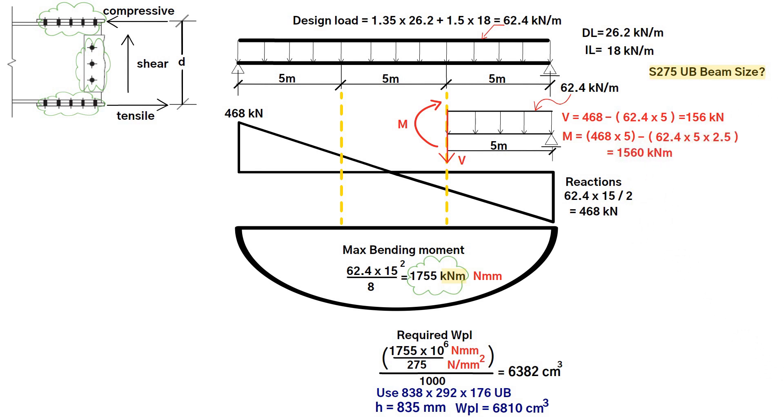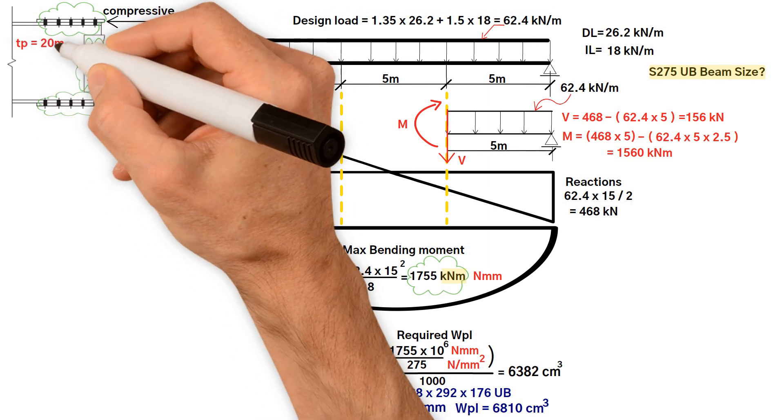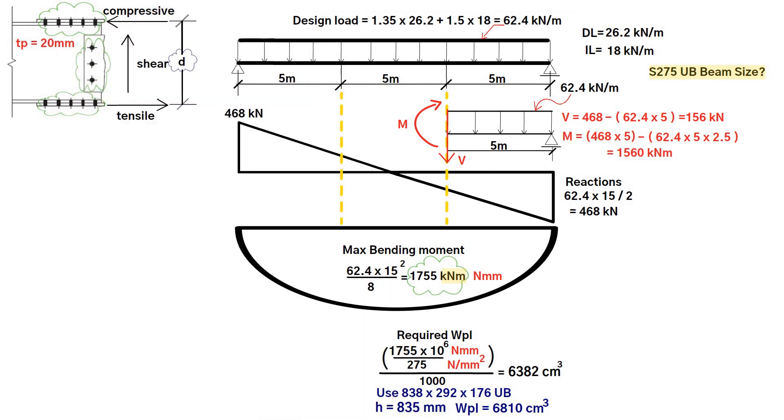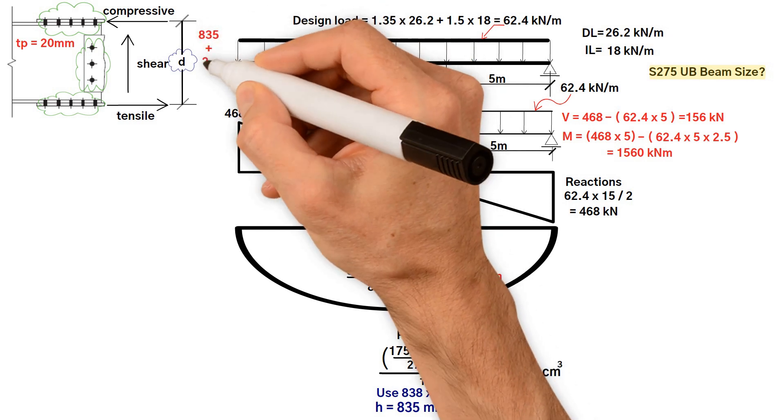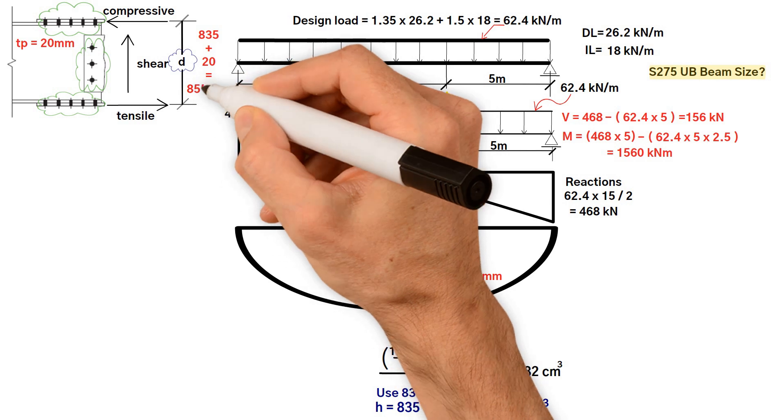If we look, the lever arm D is the distance between the centers of the flange plates. If we initially estimate a plate thickness for the flange plates of 20 millimeter and refer to section tables for the depth of the beam we get D equals 835 plus 20 equals 855 millimeter.